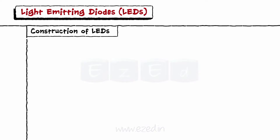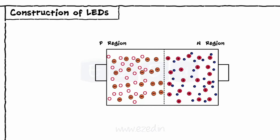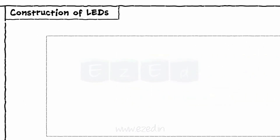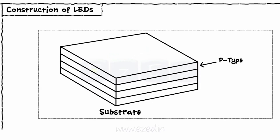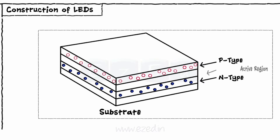Let's see the construction of LEDs now. LEDs also have a PN junction structure with two terminals such as anode and cathode, same as a normal PN junction diode. It is constructed by developing three semiconductor layers on the substrate layer as shown. One is a P type layer having holes as majority charge carriers, the other is a N type layer having electrons as majority charge carriers, and in between these two layers lies a third layer known as the active region.